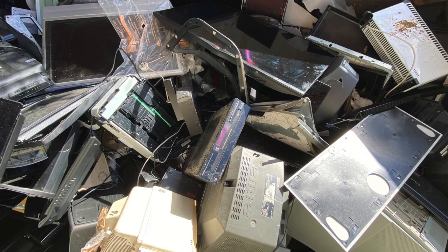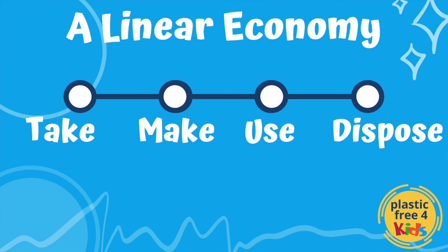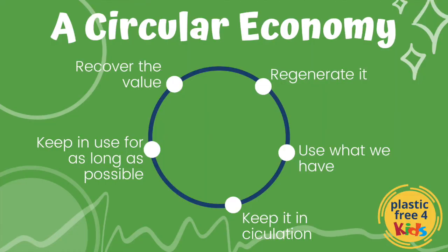So we use something, we get its value and then we throw it away and it ends up in landfill forever. A linear economy is take, make, use and dispose. A circular economy focuses on keeping things in use for as long as possible, so we want to maximize the value of the thing while we're using it.